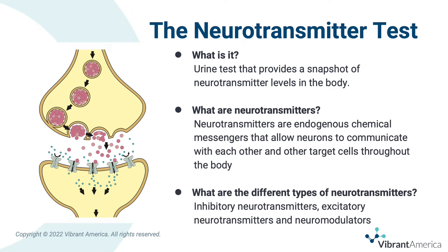Vibrant offers the most comprehensive neurotransmitter test on the market. Our test is a urine test that provides a snapshot of neurotransmitter levels in the body. Neurotransmitters are endogenous chemical messengers that allow neurons to communicate with each other and other target cells throughout the body. There are different types of neurotransmitters: inhibitory neurotransmitters, excitatory neurotransmitters, and neuromodulators — and these are the different types we will be looking at on this test.